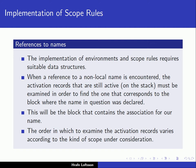Let's go directly into the implementation of scope rules. We had earlier talked about the two different types of scope rules — static scope and dynamic scope. The implementation of the environments and scope rules requires particular suitable data structures. When we are referencing a non-local name in a program, the activation records that are still active — meaning they're still on the stack — must be examined in order to find the one that corresponds to the block where the name in question was declared.